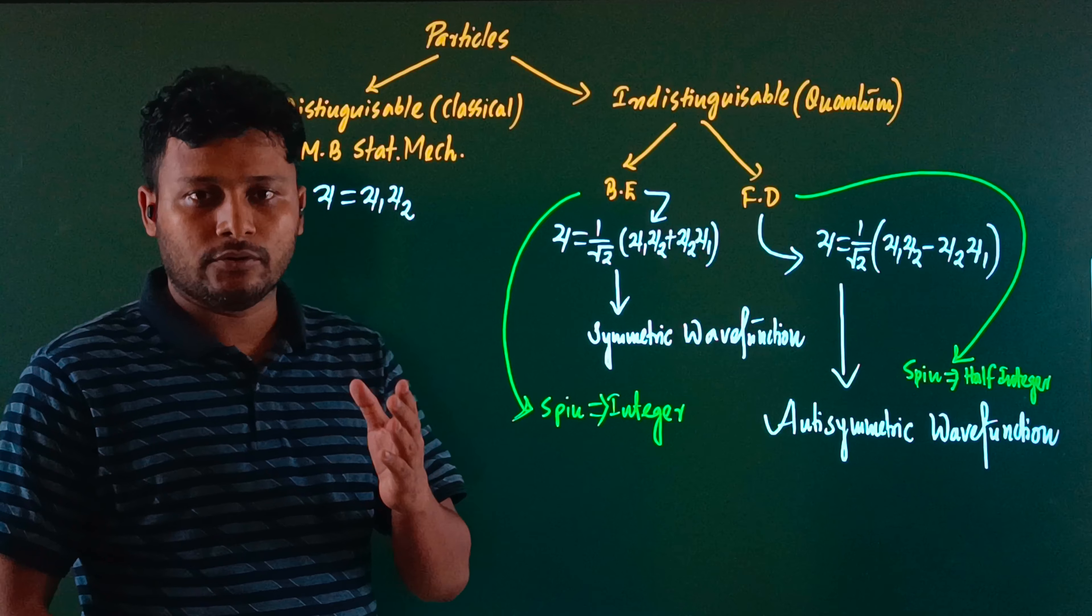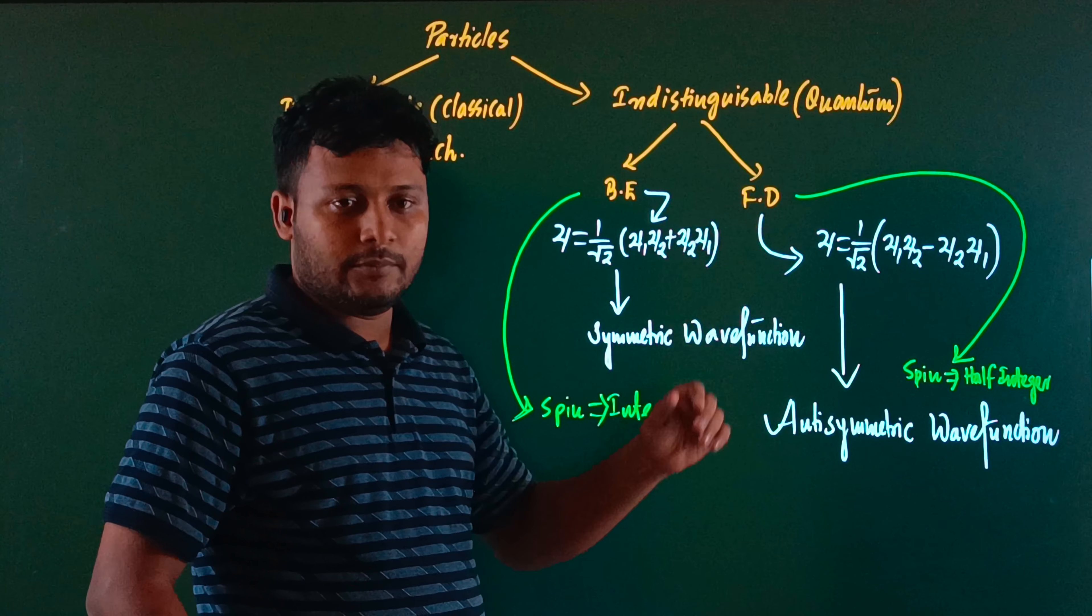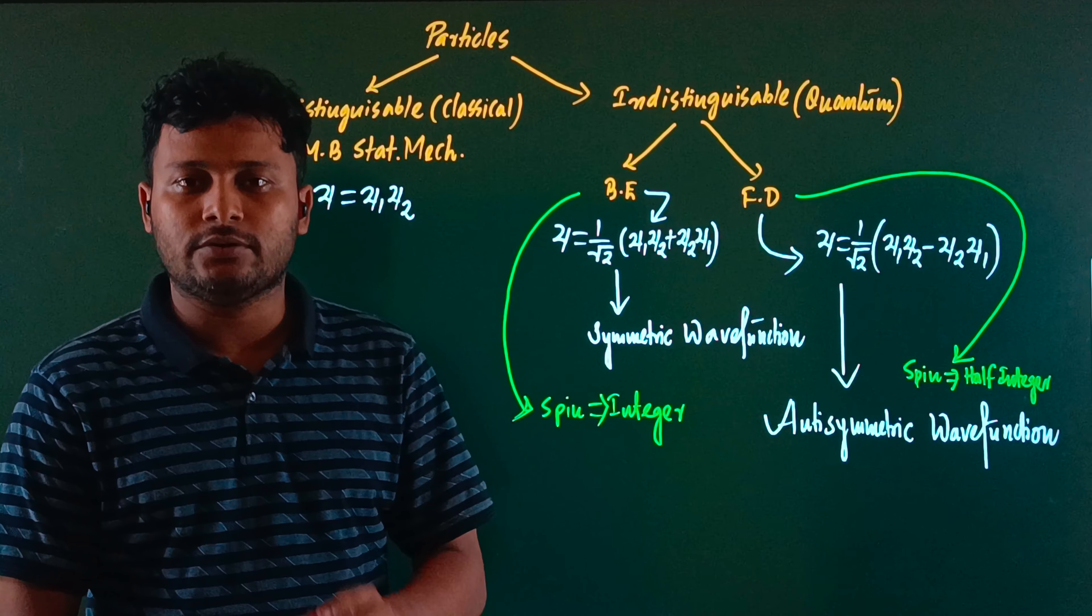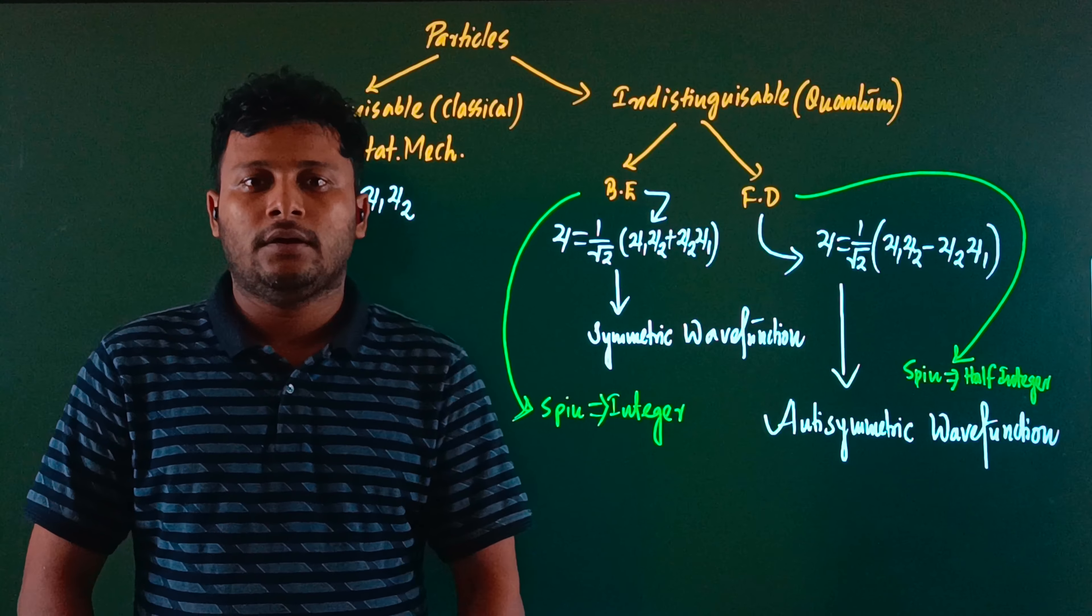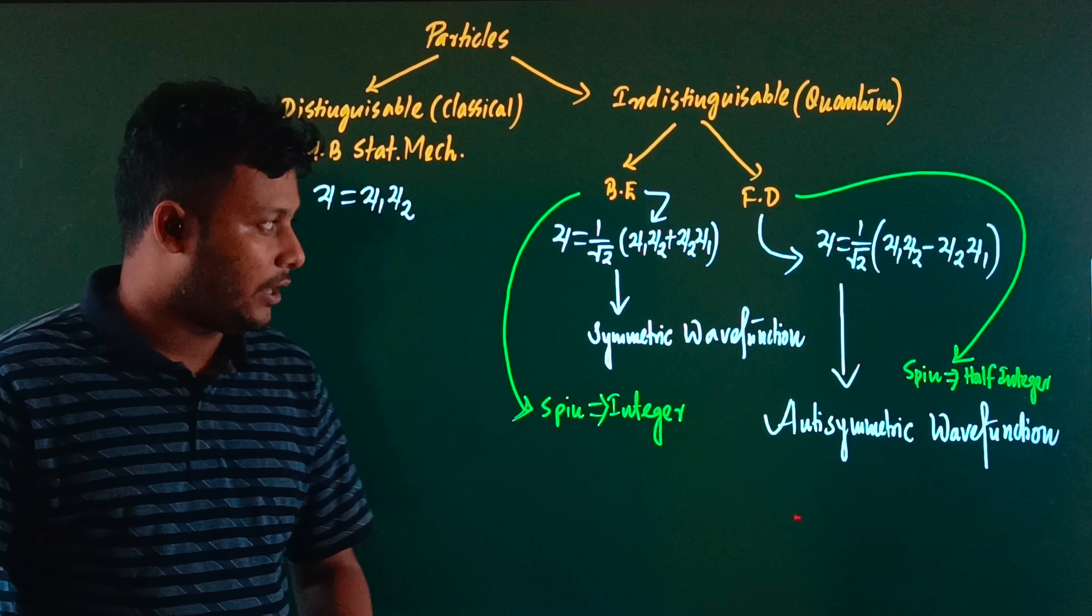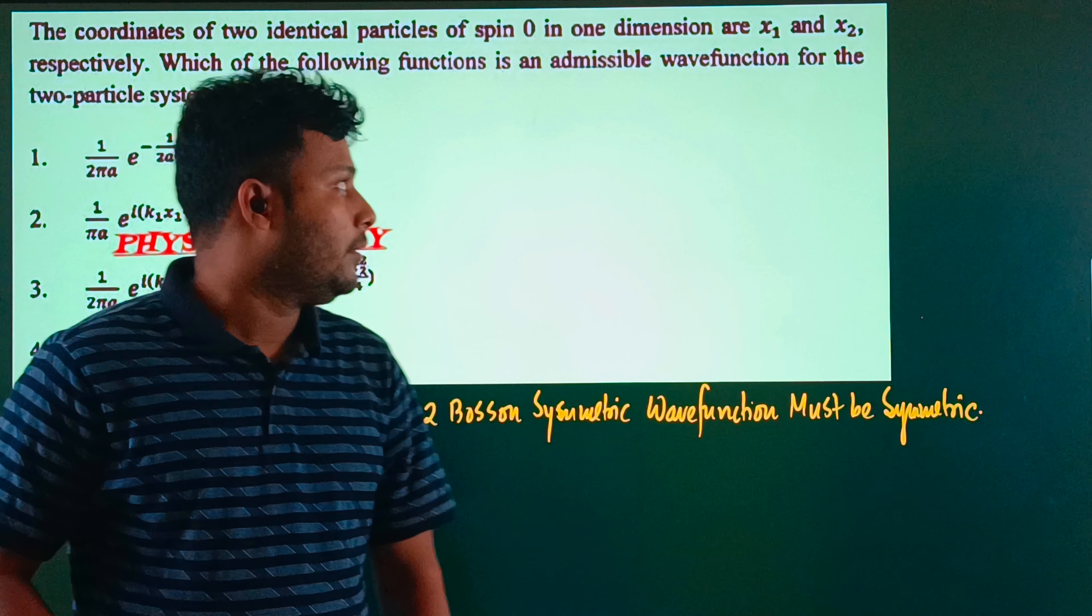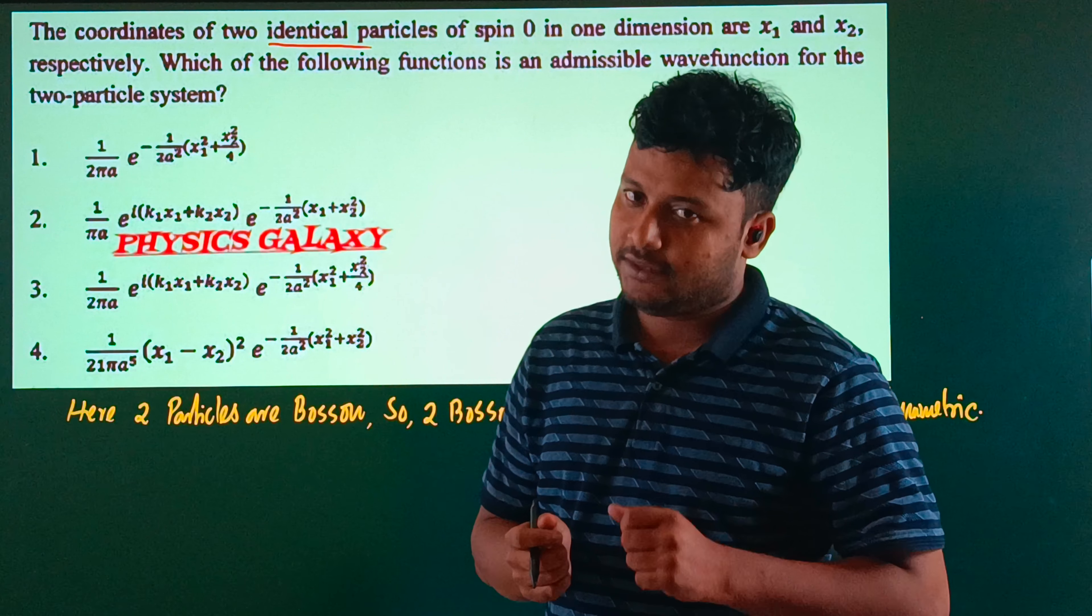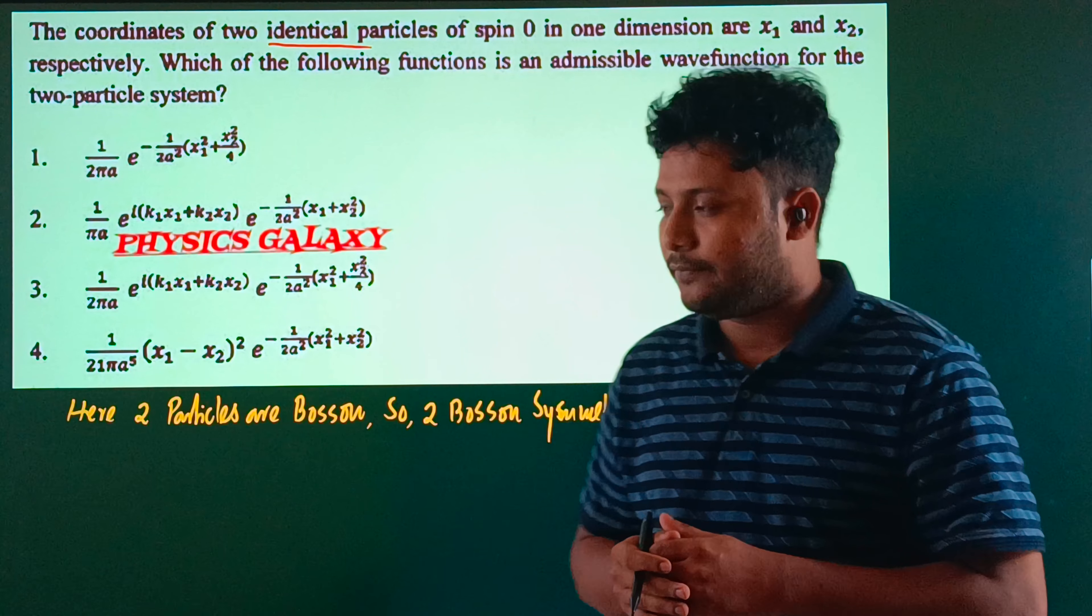The spin determines wave function properties. Bosons have symmetric wave functions, fermions have anti-symmetric wave functions. In this question, the particle spin is zero. Since these are identical quantum particles with spin zero, they are bosons. Boson wave functions must be symmetric.